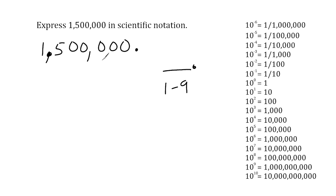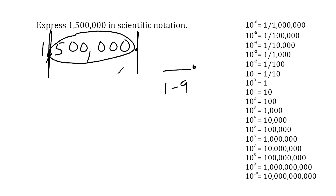After moving your decimal, you want to see how many place values you moved to get to that location. We started at the end and ended up after the 1, meaning we skipped over six place values. So we write 1.5 — dropping the ending zeros — and always write times 10, where the exponent represents how many place values you skipped over to get to the new location, which in this case is the sixth power. So 1,500,000 in scientific notation is 1.5 times 10 to the sixth power.